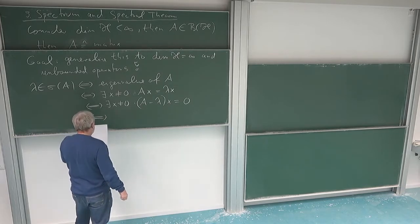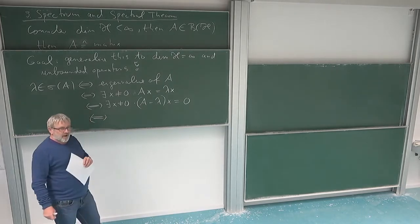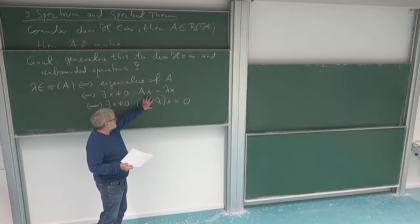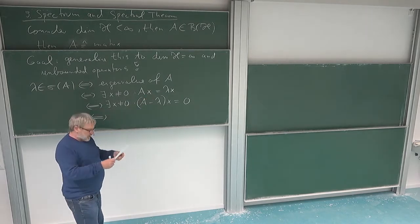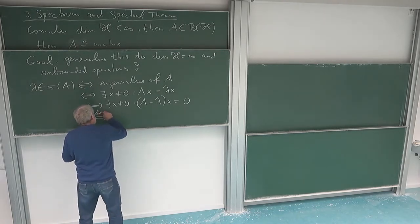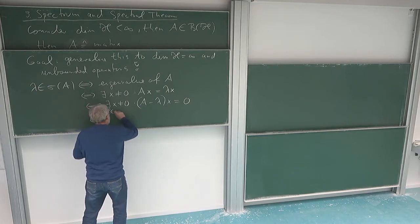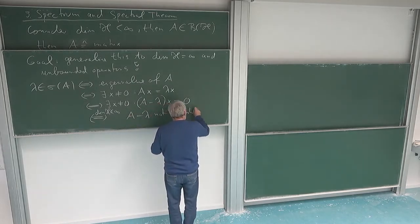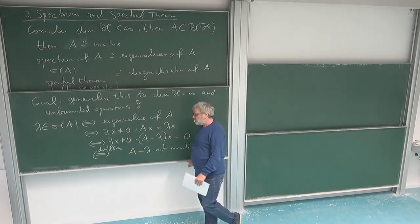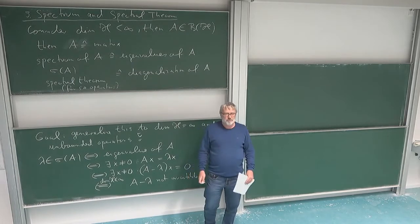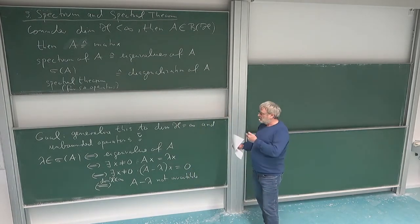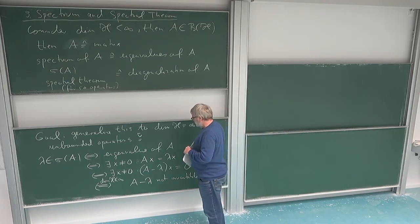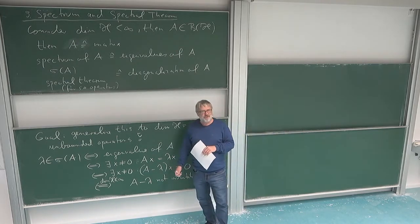This means that the operator A minus lambda is not injective, because we have something in the kernel of A minus lambda which is not 0. And actually in finite dimensions this means it's not invertible. If it's not injective it's of course not invertible. Furthermore, being not invertible is the same as being not injective, since in finite dimensions for linear operators injectivity and surjectivity are equivalent. So checking whether it's invertible is the same as checking whether it's injective.